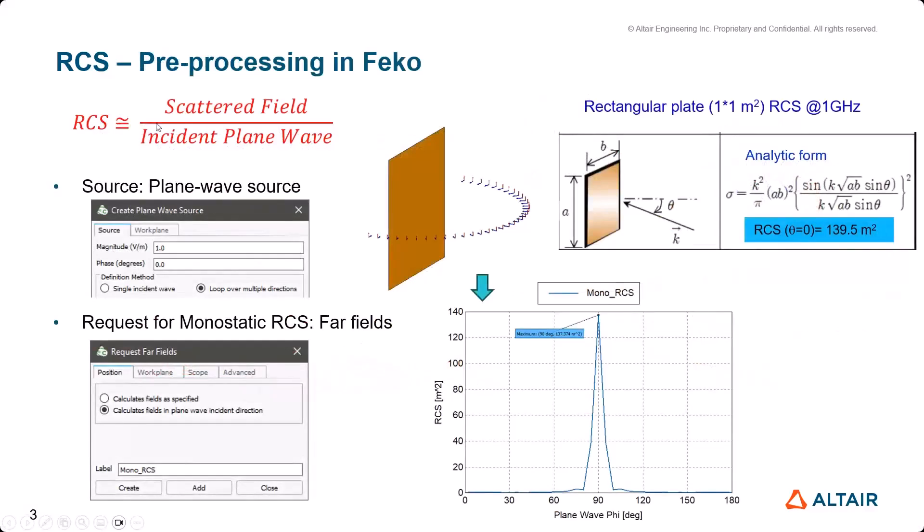Based on this formula, we can set up FEKO to calculate RCS. For pre-processing, we use plane wave source as a source and we use FEKO to request for monostatic RCS calculation.